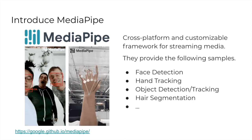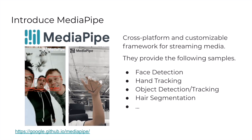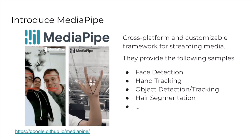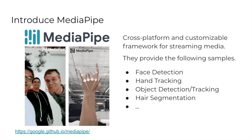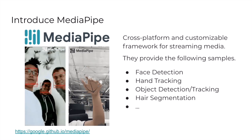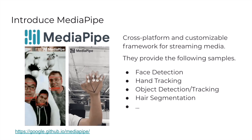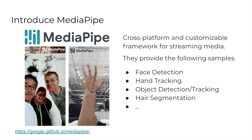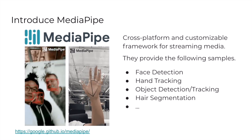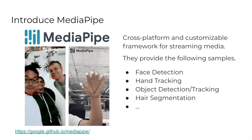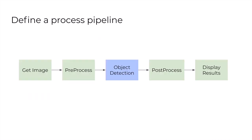To resolve this problem, we introduced MediaPipe — an open-source project developed by Google. It's a cross-platform and customizable framework for streaming media. They provide samples including face detection, hand tracking, object detection and tracking, and hair segmentation. We introduced the object tracking example to our application. MediaPipe represents the steps of inference as a pipeline — for example, getImage, preprocess, object detection, postprocess, and display results — all as one pipeline.